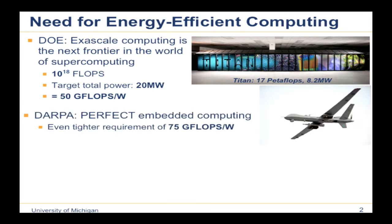To put that in perspective, the Titan supercomputer achieves about 17 petaflops of peak performance but consumes 8.2 megawatts. So we need roughly a 100x improvement in performance within only a 2x increase in power. At the same time, DARPA's PERFECT program — the Power Efficiency Revolution for Embedded Computing Technologies — targets high-performance computing in military applications at an even tighter 75 gigaflops per watt constraint within a kilowatt power budget.